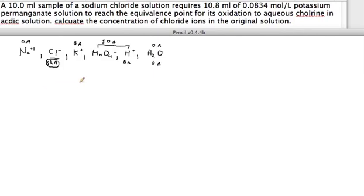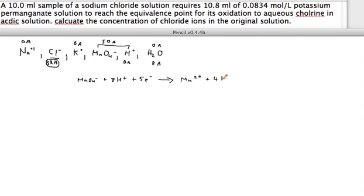Now we'll write the half-reactions. For the reduction half-reaction: MnO₄⁻ plus 8 H⁺ plus 5 electrons gives Mn²⁺ plus 4 H₂O on the product side.